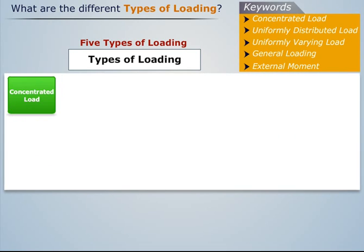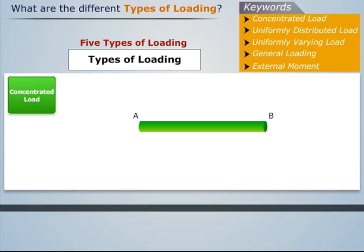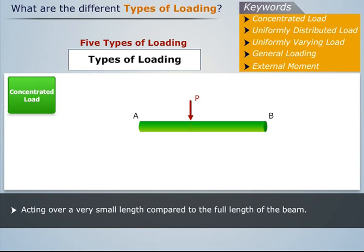Let us first understand concentrated load. Consider a beam with load acting over a very small length compared to the full length of the beam. This load can be approximated as a point load and is always represented by an arrow.